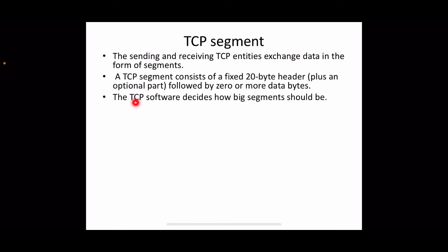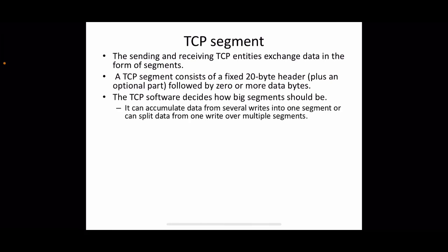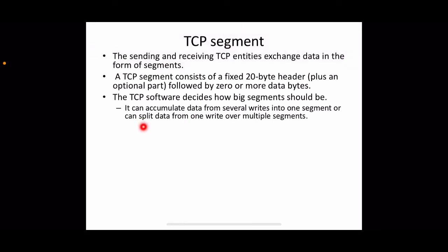The TCP software decides how large segments should be, based on network conditions. It can accumulate data from several writes into one segment, depending on the maximum size allowed. Conversely, if the application data is very large, the TCP software may split the data from one write into multiple segments.